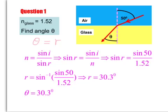Here we have an example of light going from the air into glass. The refractive index of glass is 1.52. And you are asked to find angle theta, which is angle r, angle of refraction. So theta is r. So first of all, we quote the formula from the previous slide.